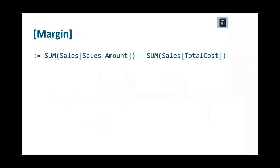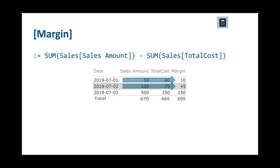We can see this in the demo. The margin in percentage as a measure is shown in blue so everyone can see it's a measure, and the table name is omitted. This measure now works in all circumstances because it sums the elements first — that's the right way to calculate a percentage. You can never sum or average percentages and get the correct result. You always have to sum up the underlying elements — margin and sales amount — and then perform the division.